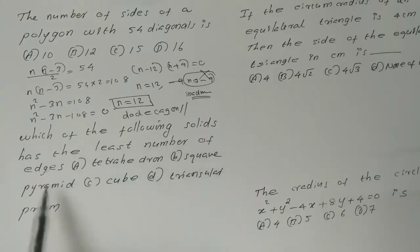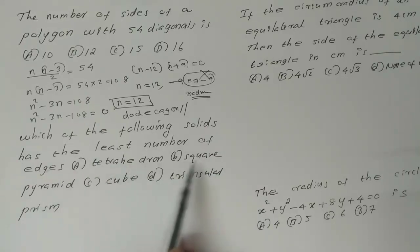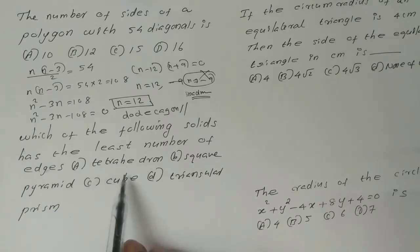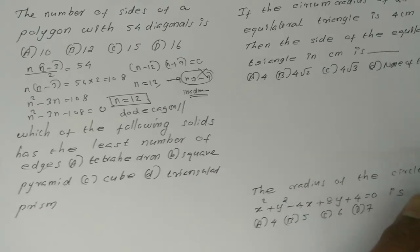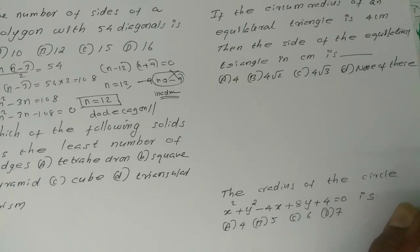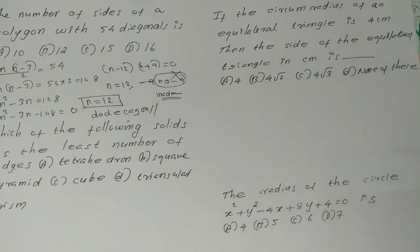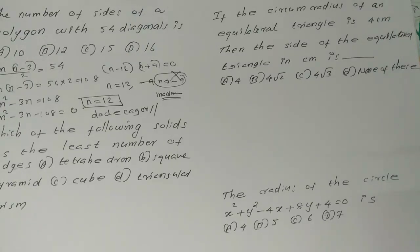Which of the following solids has the least number of edges? Options: tetrahedron, square pyramid, cube, triangular prism. Also: the circumference of an equilateral triangle is 4 cm — find the side of the equilateral triangle in centimeters.